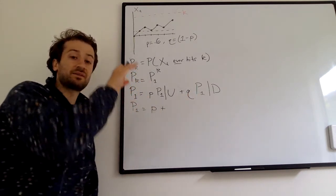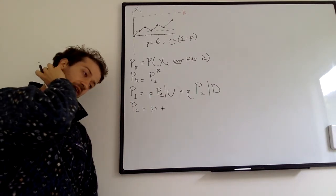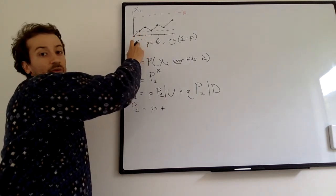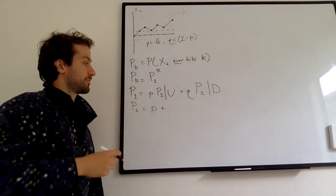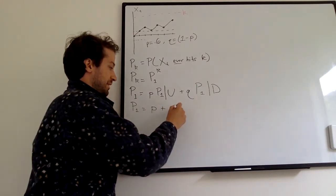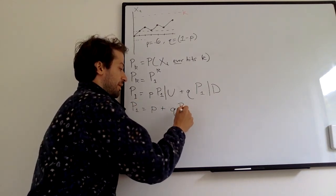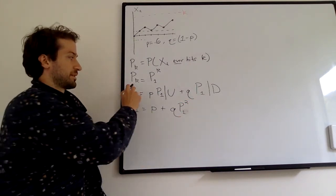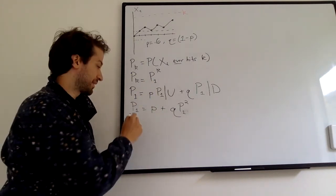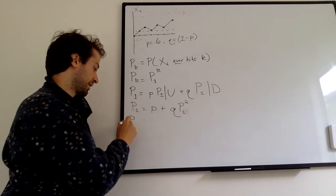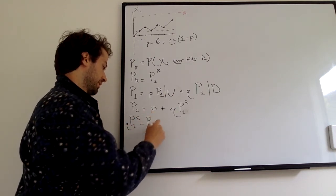The second term is a little trickier. P sub 1 given we went down means we're at negative 1 now. What's the probability of hitting 1 from negative 1? That's the same as starting from 0 and hitting 2, which equals P sub 2, which equals P sub 1 squared. So that term becomes Q times P sub 1 squared. We now have everything in terms of P sub 1, and moving everything to one side gives us: Q times P sub 1 squared minus P sub 1 plus P equals 0. That looks like a quadratic equation.